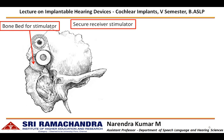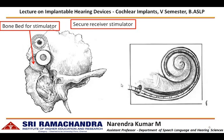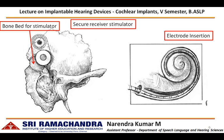By carefully bringing the intracochlear electrode through the facial recess, the surgeon inserts the electrode by making a small incision on the round window. At this point, the perilymph gushes out. Gradually and slowly, the surgeon pushes the intracochlear electrode array into the cochlea. Once all the electrode contacts are securely placed within the cochlea, the surgeon may plug the round window or the cochleostomy with a cartilaginous graft.